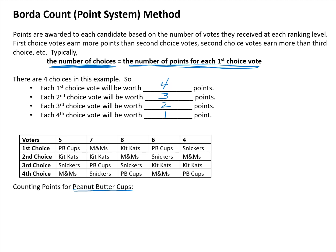Looking at first choice votes for Peanut Butter Cups: they appear twice in the first choice column. These five people and these six people voted for Peanut Butter Cups as their first choice, giving a total of eleven first choice votes. Each first choice vote earns four points, so that's four times eleven.